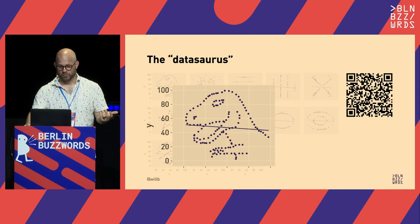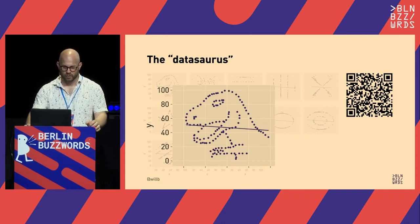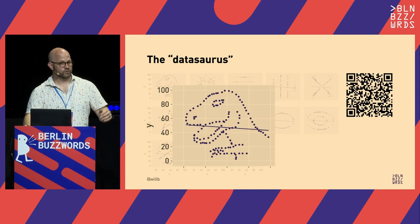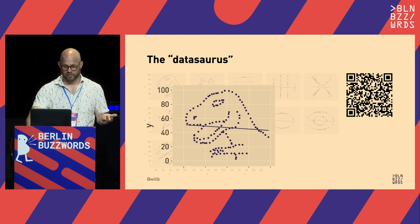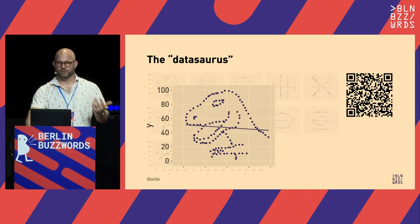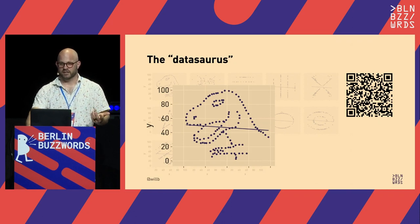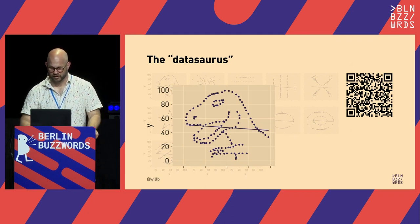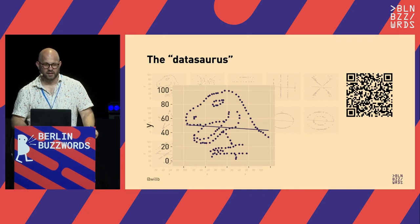This QR code points to a blog post that Cairo wrote about this dataset. But if we just look at the summary statistics, we might assume all sorts of things about what generated the data — when the answer is really that someone drew a picture of a dinosaur while trying to satisfy certain summary statistics.